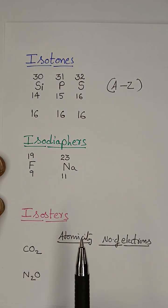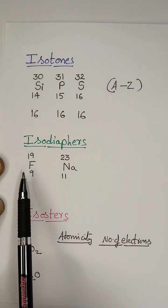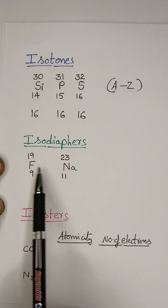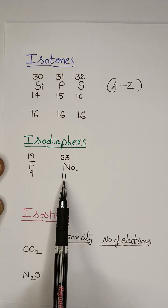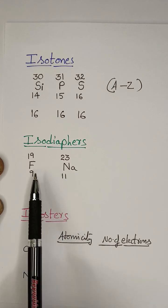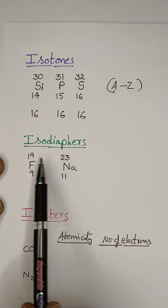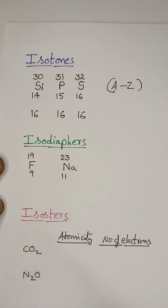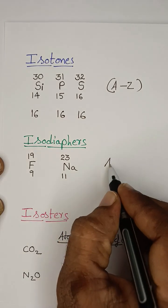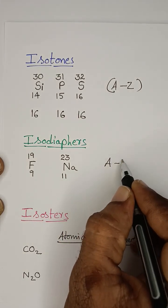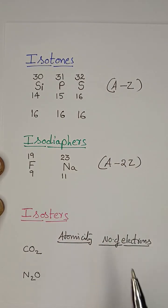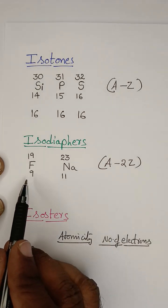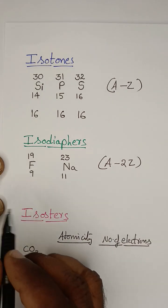Next, isodiaphores. Isodiaphores means nuclides of different elements having different atomic numbers, different mass numbers, but the same isotopic number. Isotopic number means A minus 2Z. So we calculate A minus 2Z.